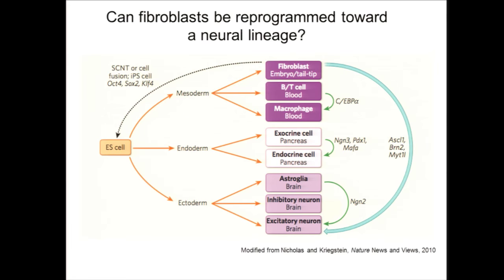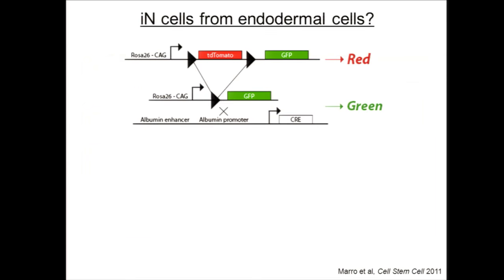The three transcription factors we found — Ascl1, Brn2, and Myt1l — were sufficient to convert fibroblasts into neurons. These cells had not only molecular and biochemical properties of neurons, but also the two principal functional properties: the ability to form action potentials and the ability to receive and project synaptic input and output onto other neurons.